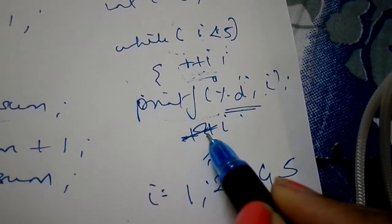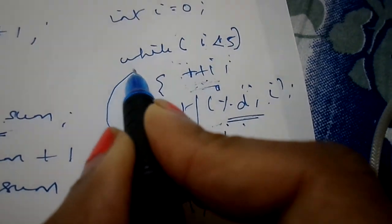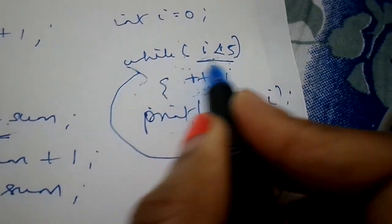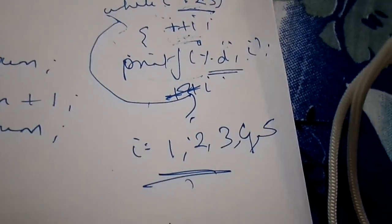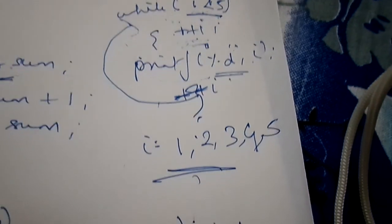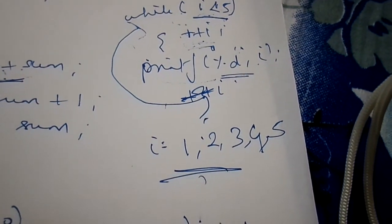But then when it goes back, i is 5, and 5 is not less than 5, it's equal, so it gets out of the loop and this is our output. This is how you perform increment and decrement operations in C programming using plus and minus.